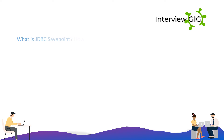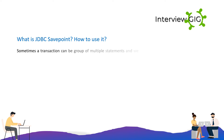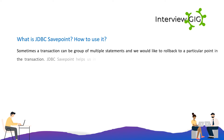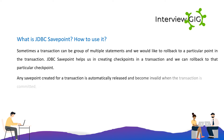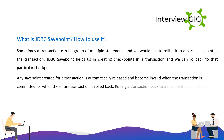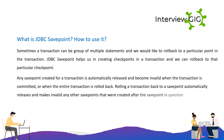What is a JDBC SavePoint and how to use it? Sometimes a transaction can be a group of multiple statements and we would like to roll back to a particular point in the transaction. JDBC SavePoint helps us in creating checkpoints in a transaction so we can roll back to that particular checkpoint. Any SavePoint created for a transaction is automatically released and becomes invalid when the transaction is committed or rolled back entirely. Rolling back to a SavePoint automatically releases any other SavePoints created after that SavePoint.